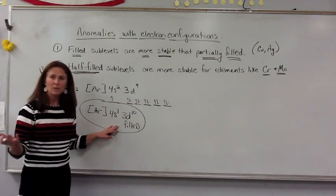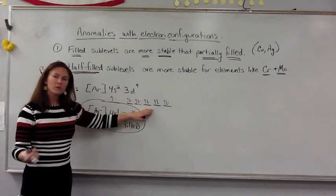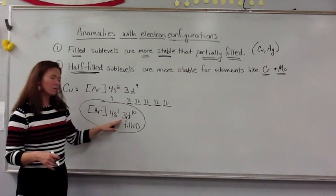So one of the exceptions to the rule is that copper will take one electron out of the 4s, fill the 3d orbital, making a configuration of 4s1, 3d10.